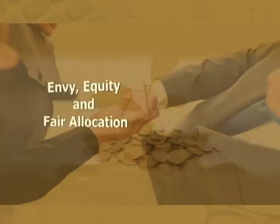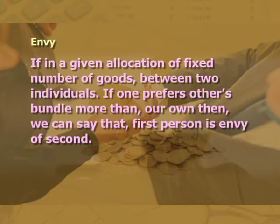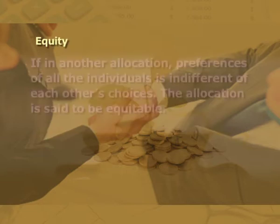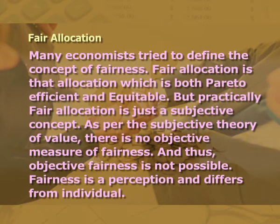Moving on to envy, equity, and fair allocation: envy — if in a given allocation of a fixed number of goods between two individuals, one prefers the other's bundle more than their own, then the first person is said to be envious of the second. Equity — if in another allocation all individuals are indifferent between each other's choices, the allocation is said to be equitable. Fair allocation is that allocation which is both Pareto efficient and equitable, but practically fair allocation is a subjective concept. As per the subjective theory of value, there is no objective measure of fairness, and fairness is a perception that differs among individuals.